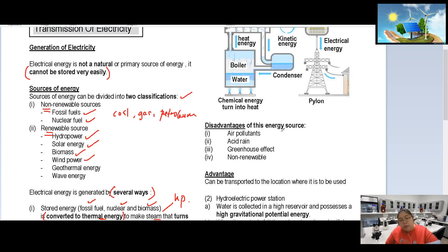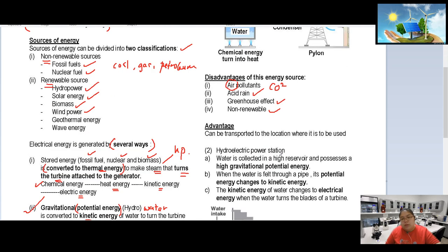Disadvantages of a thermal power station: burning produces CO2, causing acid rain and other effects. Also, the fuel is non-renewable. The advantage is that fossil fuels like petroleum and natural gas can be transported from one location to another for use — unlike wind energy, which is fixed in one place.